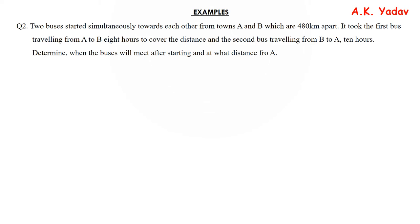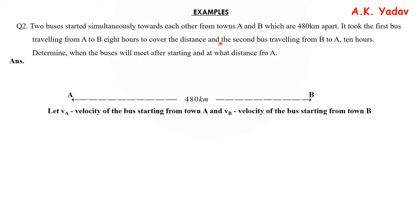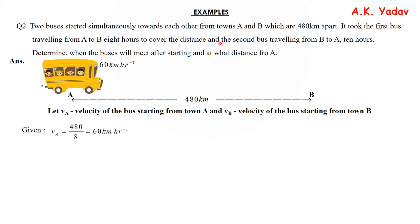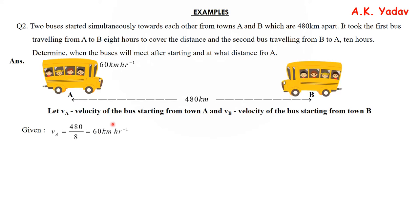Let's move to the second example. Two buses start simultaneously towards each other from towns A and B, 480 km apart. The bus from town A moves at 60 km/h and takes 8 hours. For bus B, VB = 480 / 10 = 48 km/h, because it takes 10 hours.